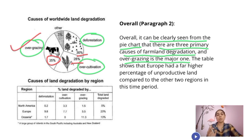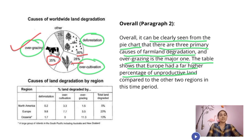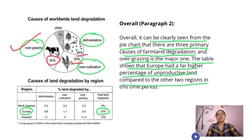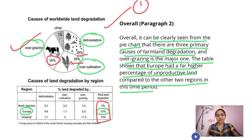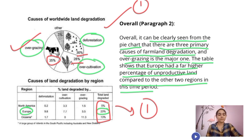Next, the table shows that Europe had a far higher percentage of unproductive land — Europe has 23% of land degraded — compared to the other two regions in this time period. You can write one sentence for the first graph and one sentence for the second graph as the major highlights.